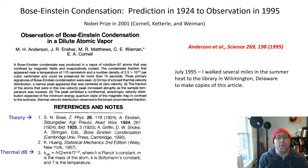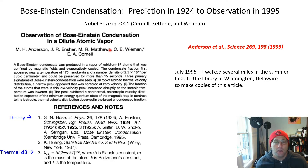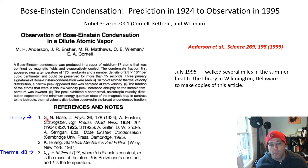The prediction was made in 1924 and was not observed until 1995. This is the paper in 1995 by Anderson and others. The principal investigators — the PIs — were Wieman and Cornell. This was a Colorado group at the Joint Institute for Laboratory Astrophysics in Boulder. The first two citations by Bose and Einstein show you the theory from 1924 and 1925.